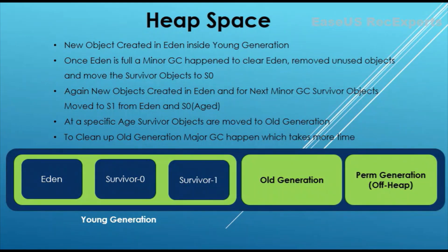Once Eden space is full, a minor GC — minor garbage collection — will happen in the young generation only, to clear the Eden space. The garbage collector will check which objects are unreferenced and not used; those will be removed from memory. All other objects that still have references are termed as survivors.